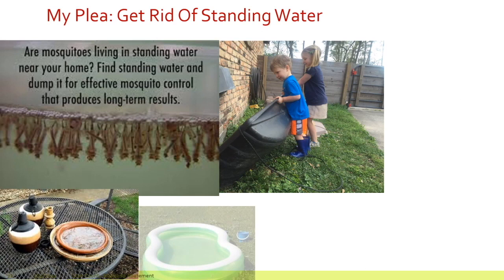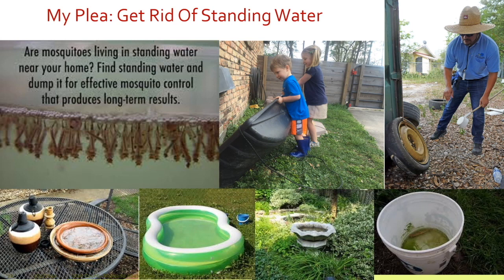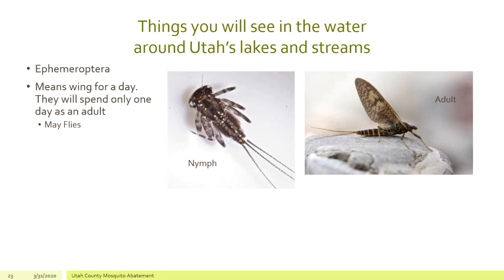And finally, we can get rid of standing water. It is my plea that if there are mosquitoes living in standing water around your home, go out and find that standing water and dump it for effective control of mosquitoes. The buckets, the swimming pools — now that we're getting into the spring, go outside and look around your yard. Make sure there isn't anything holding water. If there is, dump the water out and turn it upside down to eliminate that as a source of mosquitoes.